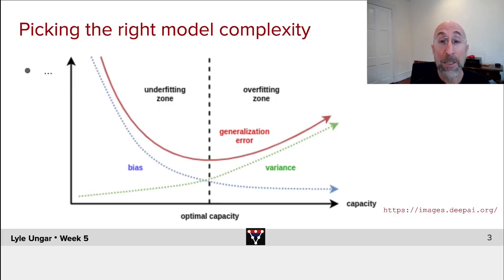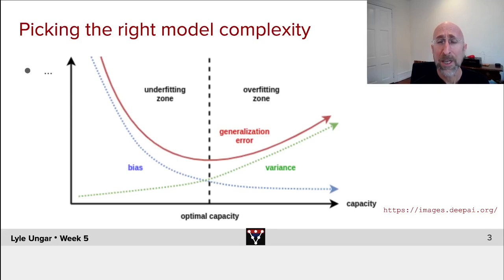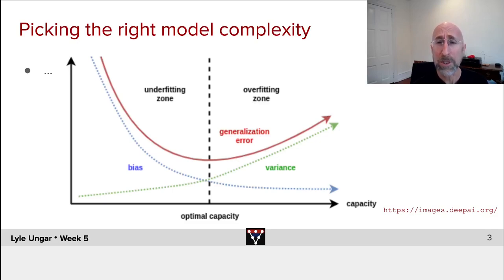The key idea behind regularization is the bias-variance trade-off. On the x-axis is some measure of the capacity of the neural net — how complicated it is, how much information it can store. You could think of that as the number of adjustable weights. If you start with a small network, it will tend to underfit, with high bias and high training error. As you get a more complex network, the bias and training error go down, but it would have high variance across training sets and higher test error.